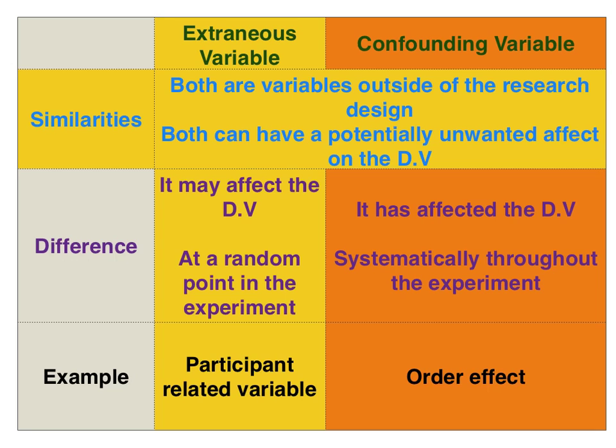An example of a confounding variable is if a repeated measures design has been used and it hasn't been counterbalanced — there would be an order effect, and this has been discussed in one of my other clips. An example of an extraneous variable is particularly likely when using small sample sizes in an independent groups design; we might have participant-related variables, for instance a gender imbalance, an age imbalance, or other demographics that might actually affect the dependent variable.